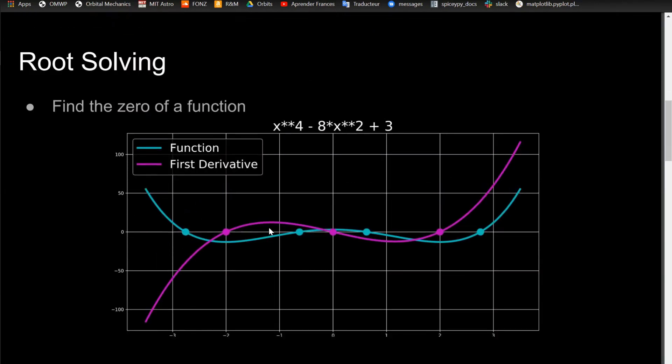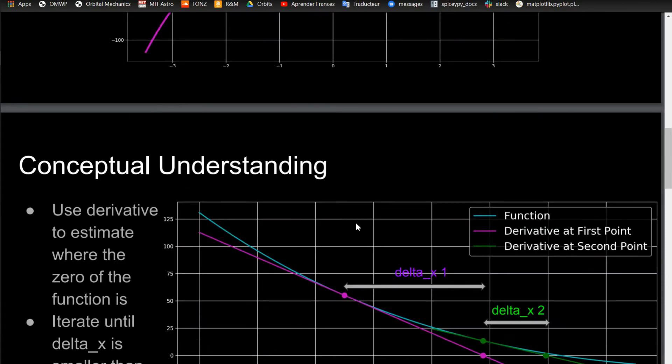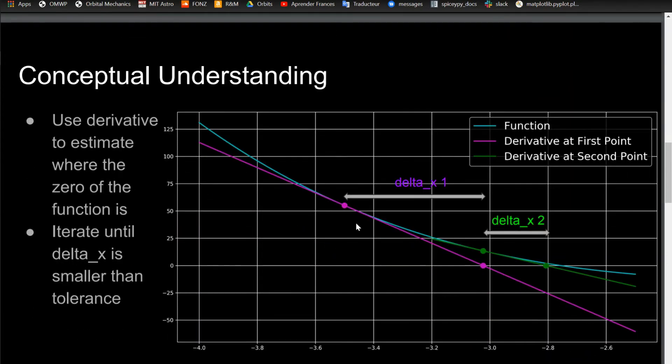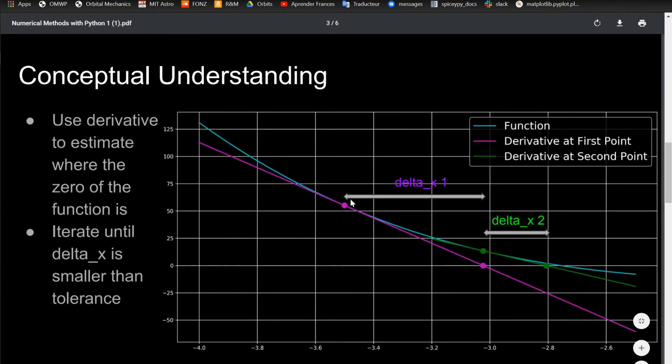What you do is you'd have some sort of initial guess. For this case, I just initially guessed negative 3.5. You find the derivative of the function at that point, which is represented by this purple line. You follow this purple line, you follow the derivative until the derivative, this line itself, reaches y equals zero. You take this point, whatever this x value is, like negative 3.01 or something, and then you use that for your next guess.